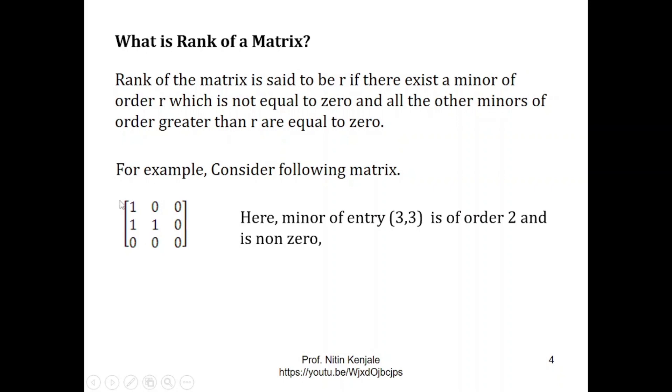Since this sub matrix is of order 2 we say that this minor is of order 2 and its determinant is 1 so it is non-zero. In simple language you can consider minors of the given matrix are possible sub matrices of the matrix.